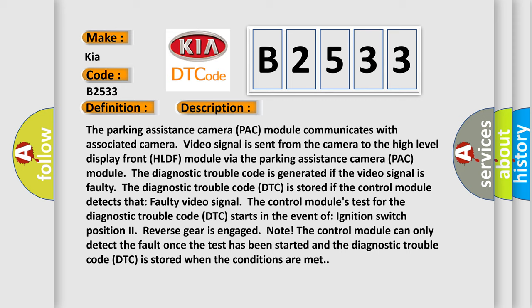The diagnostic trouble code DTC is stored if the control module detects that faulty video signal. The control module's test for the diagnostic trouble code DTC starts in the event of ignition switch position to reverse gear is engaged. Note, the control module can only detect the fault once the test has been started and the diagnostic trouble code DTC is stored when the conditions are met.